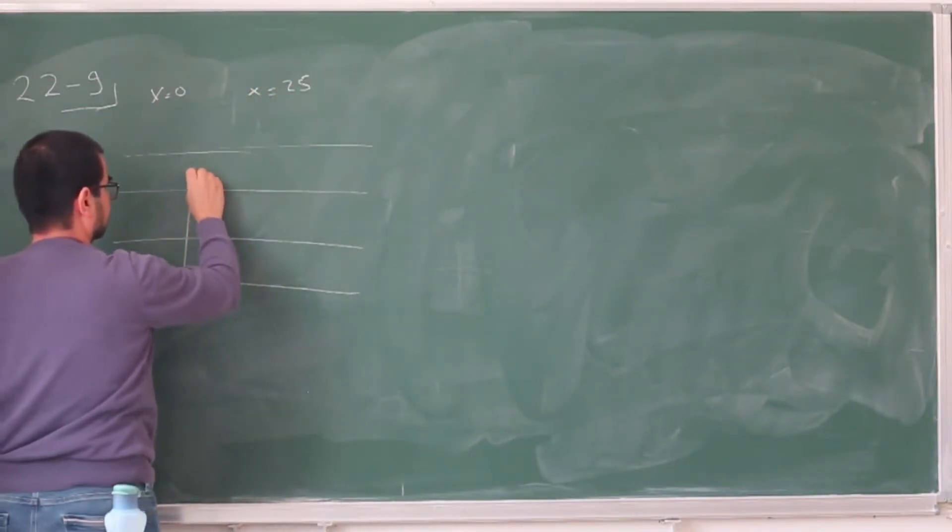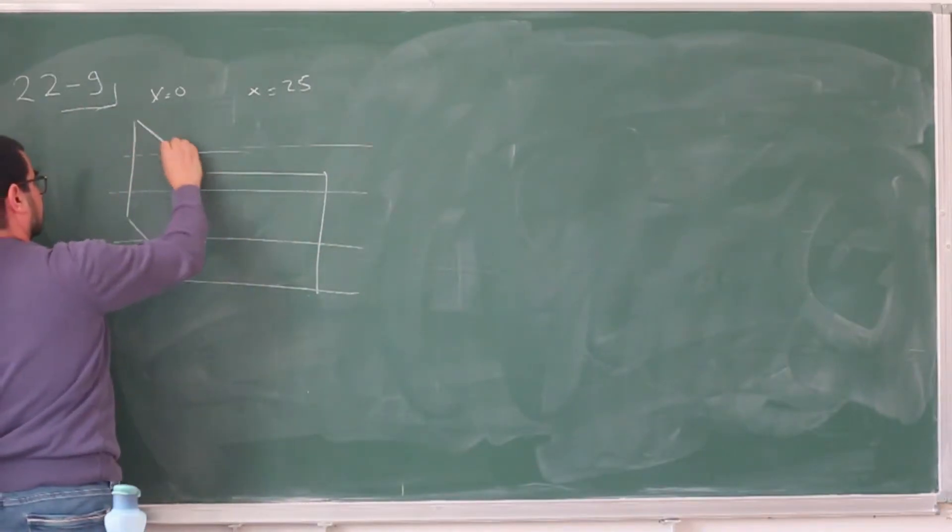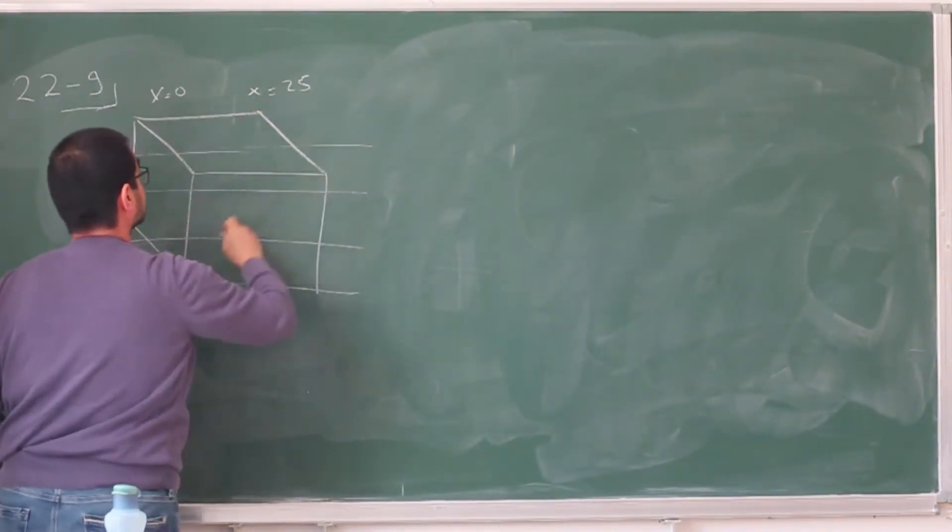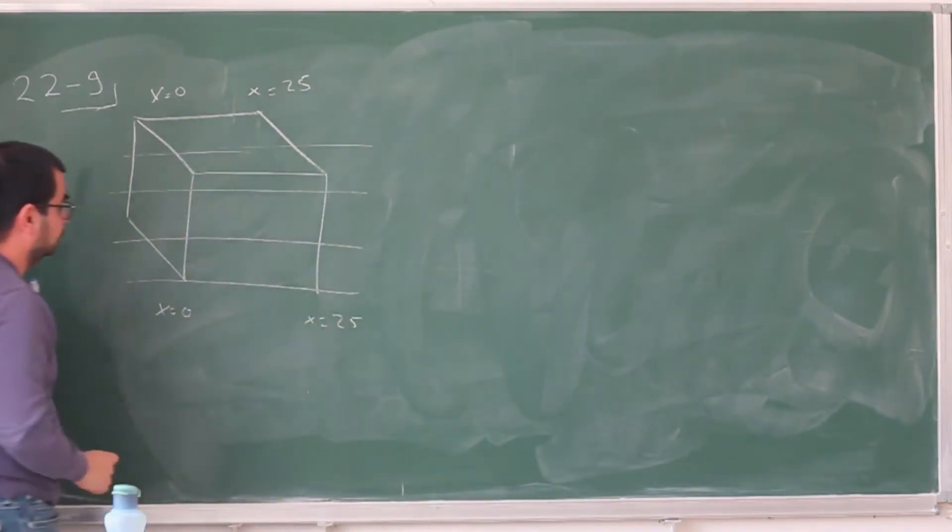And there's some cube, or a cubical region, if you will. Actually, one side is at x equals 0, and the other side is x equals 25.